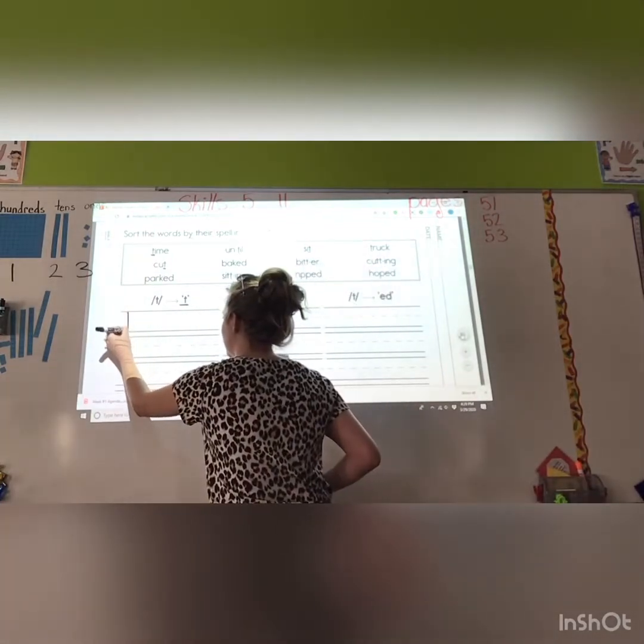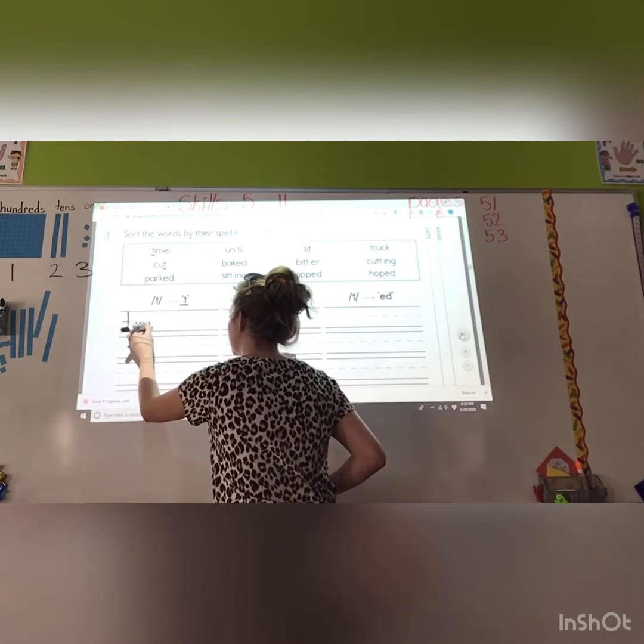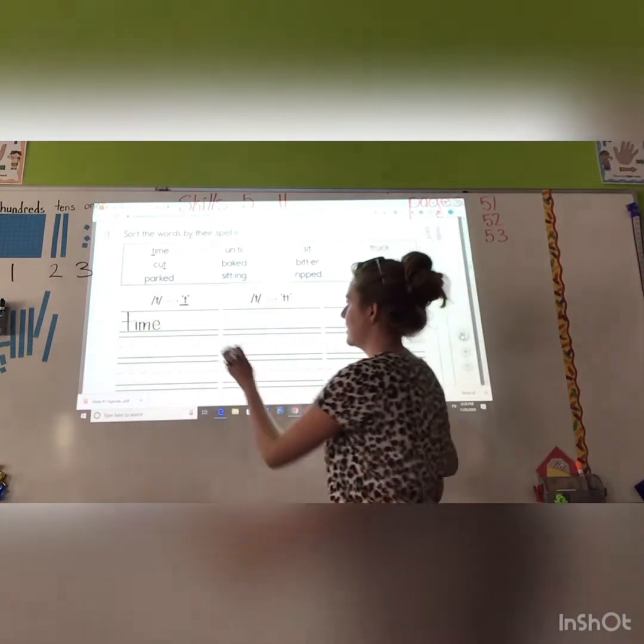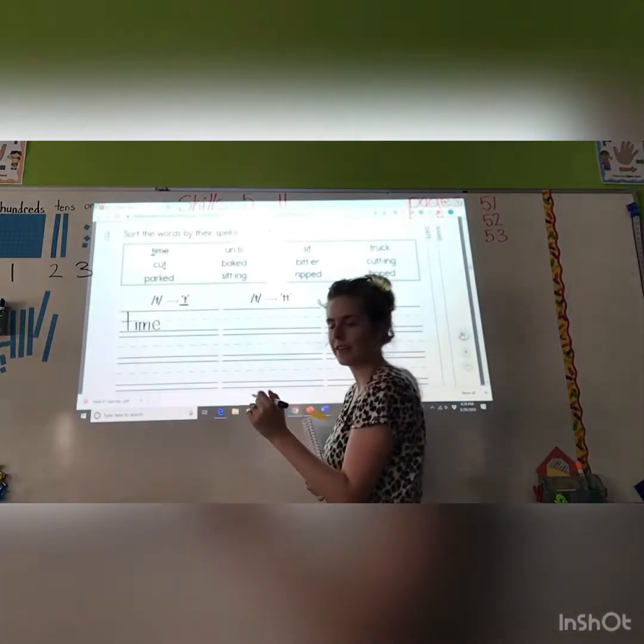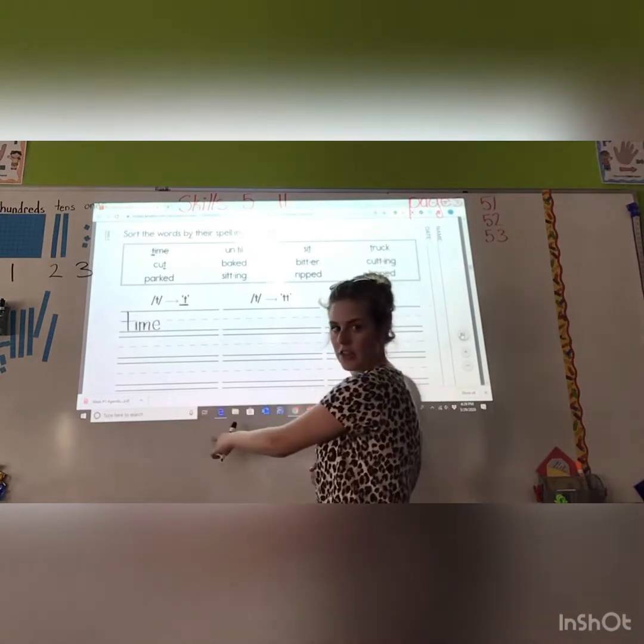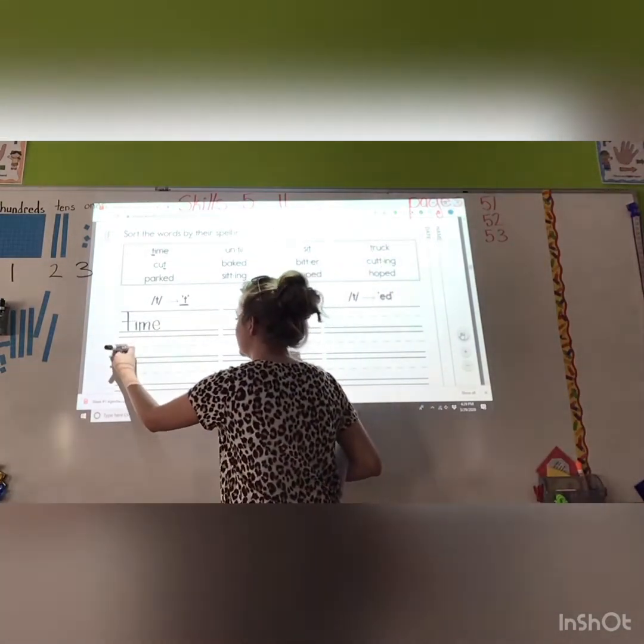Ripped has an E-D at the end. So, we're going to skip. Truck. Cutting. Hoped. So, what I'm going to do with my black marker, you can use a black pencil. You can use a colored pencil or a crayon. Whatever you want to use. That's A-OK with me. I'm going to write the first one that we found.